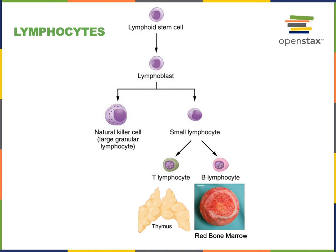T-lymphocytes mature in the thymus, a lymphoid organ located in the superior mediastinum, just anterior to the base of the heart. While all leukocytes are originally formed through hematopoiesis in red bone marrow, immature T-lymphocytes migrate from the red bone marrow to the thymus where they become fully matured and immunocompetent — meaning they are prepared to bind antigens and become activated to defend against infections. B-lymphocytes become immunocompetent within the red bone marrow before they leave it.